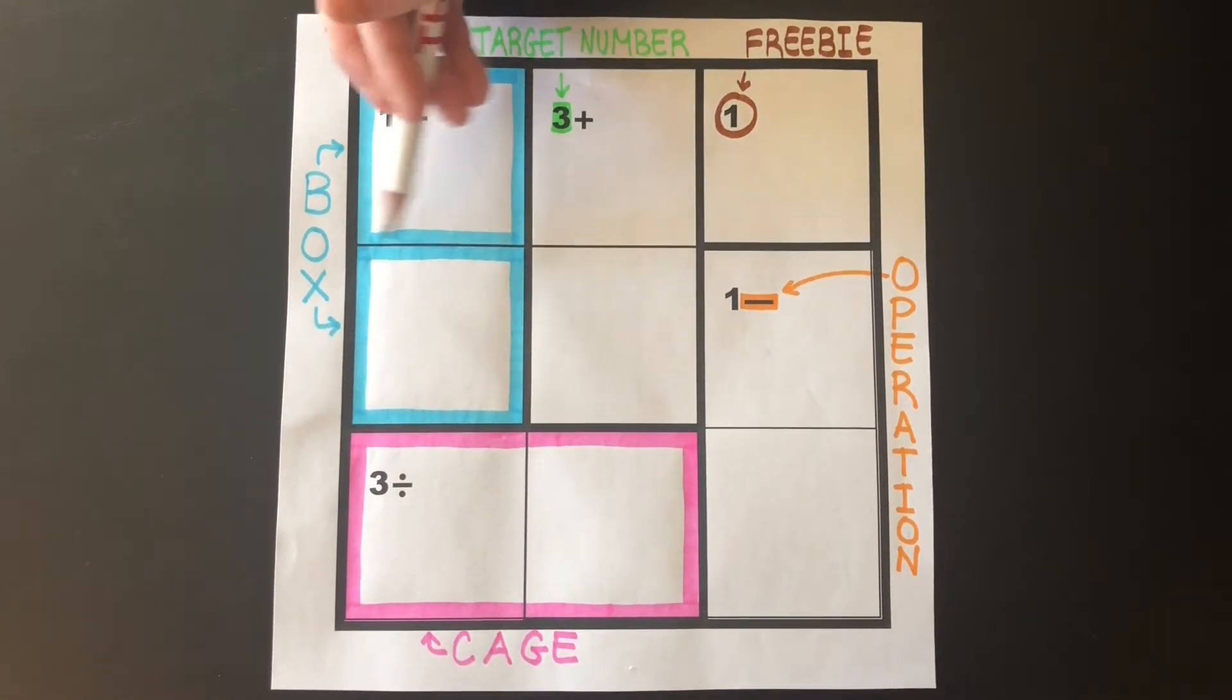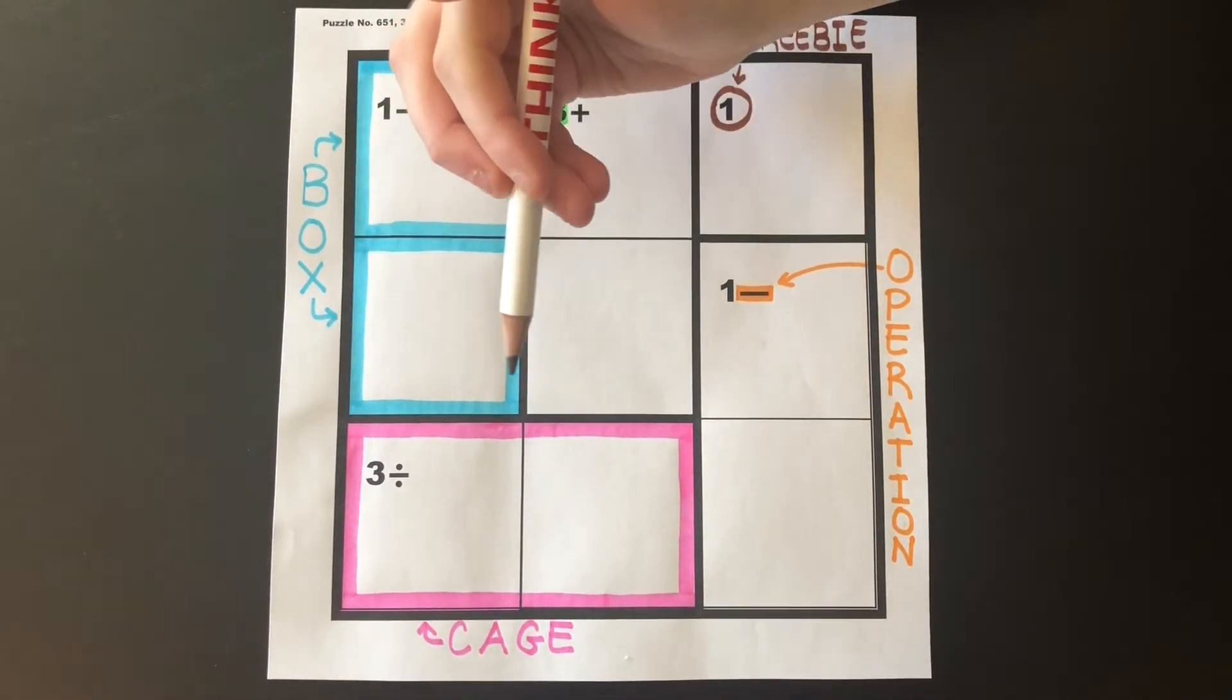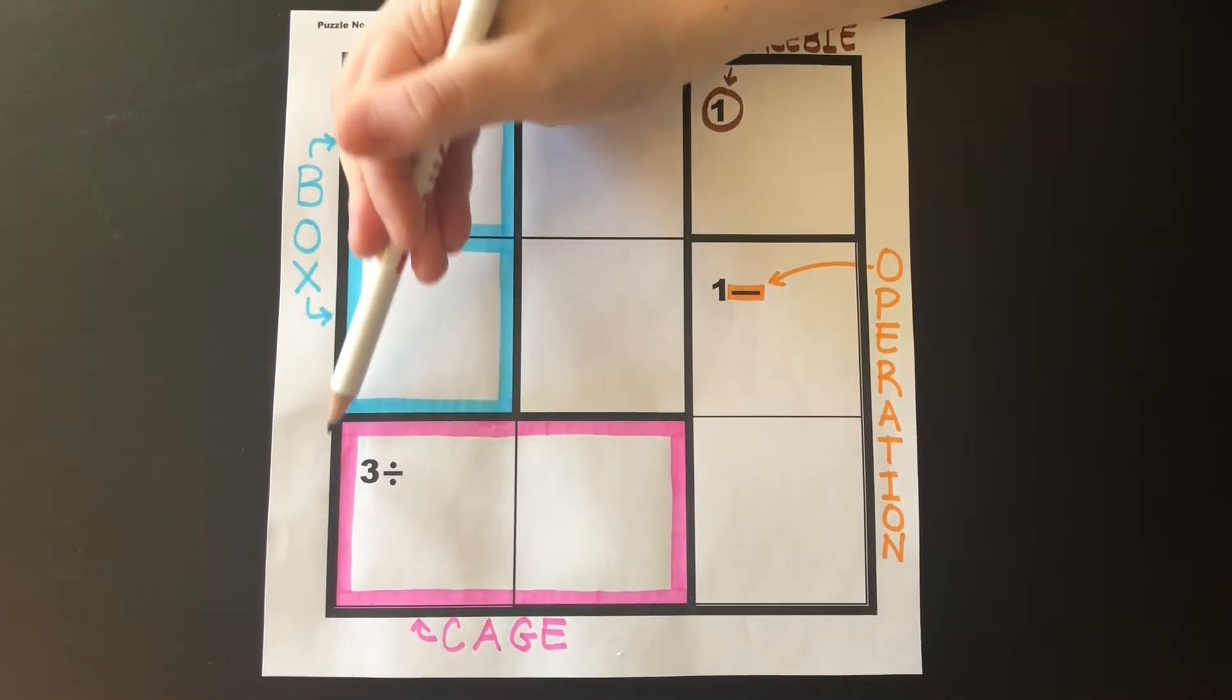A box is one chamber in a row or column. A cage is boxes defined by a bold line.